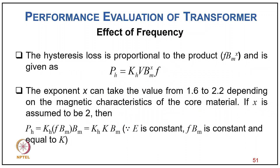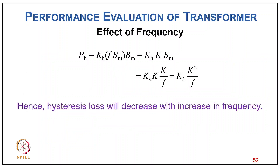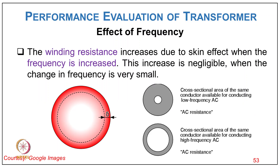The hysteresis loss is proportional to Bm^x × f, where x ranges from 1.6 to 2.2 depending on magnetic characteristics. If x is assumed to be 2, then Ph = Kh × f × Bm², and since f×Bm = k (constant at constant voltage), Ph = Kh × k × Bm = Kh × k²/f. Hence hysteresis loss decreases with increasing frequency when voltage is held constant.